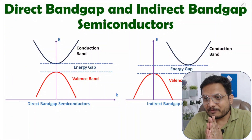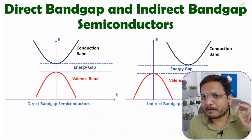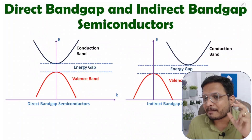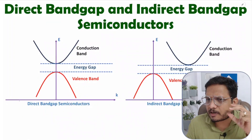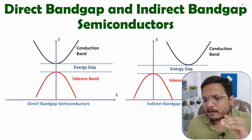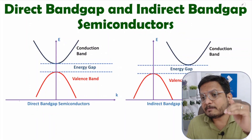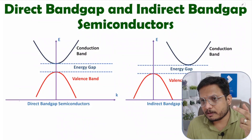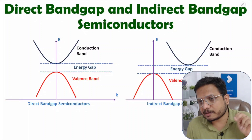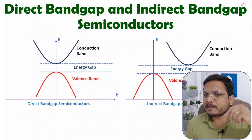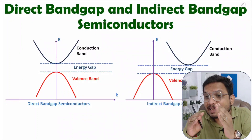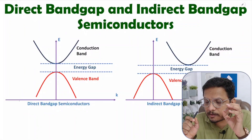Hello friends, welcome to Engineering Friend. In this video, I'm going to explain direct band gap and indirect band gap semiconductor materials. After watching this video, you will get to know why we select direct band gap material in some situations and why we select indirect band gap semiconductor material in some applications. Before I explain why we should select those materials, first you need to understand what are the basic characteristics of those materials.